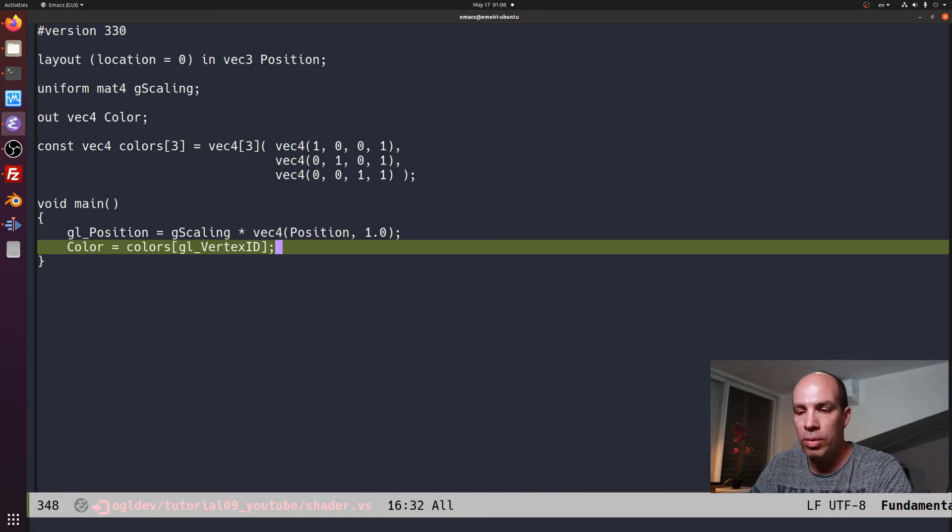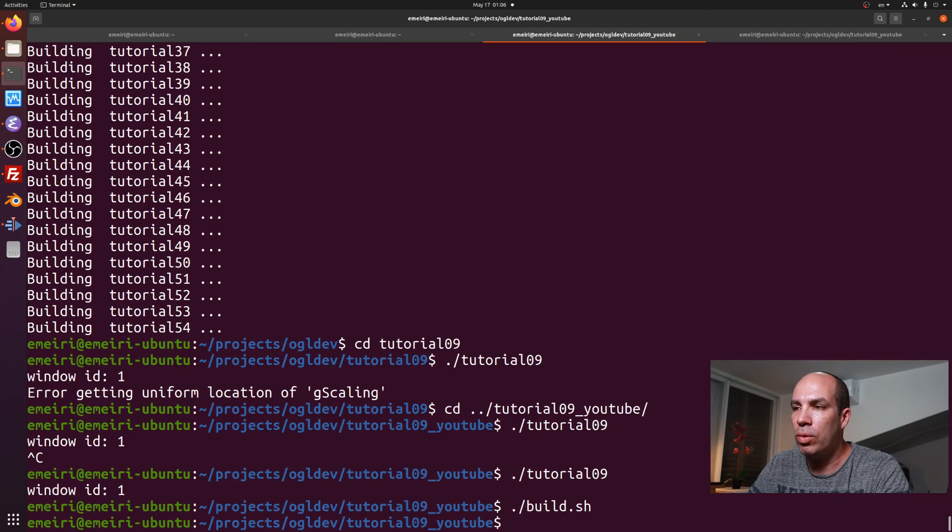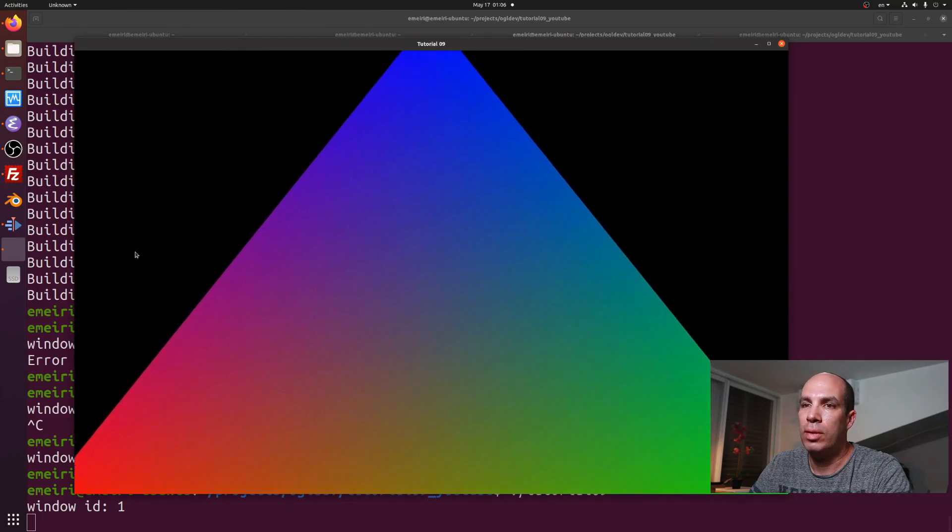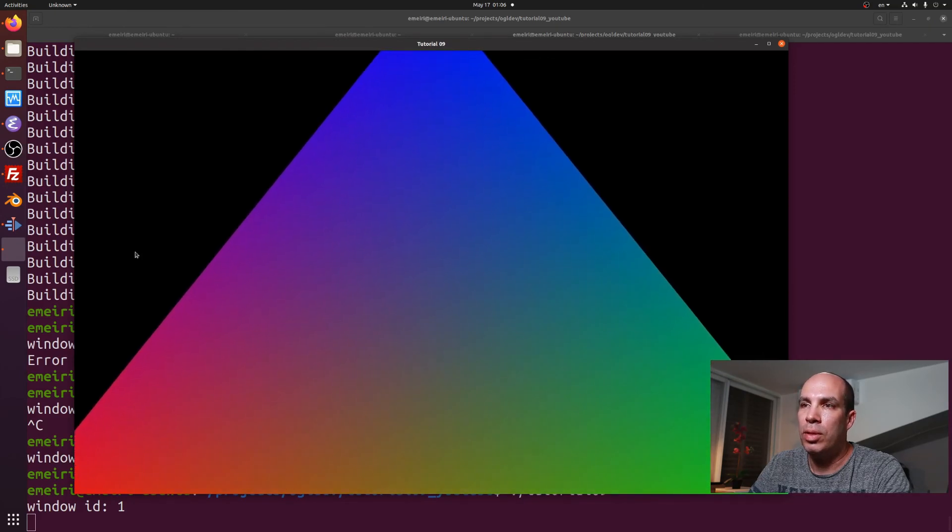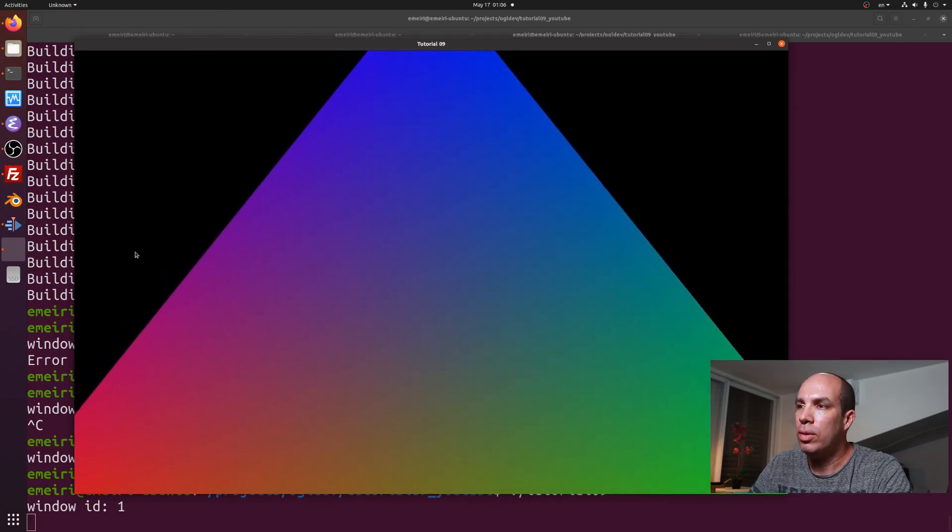And so let's see the result. So we need to build it as usual, call build.sh and then run this. And here we can see both the scaling and the interpolation of the color across the triangle.